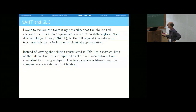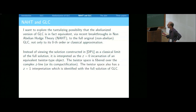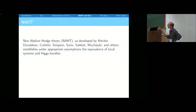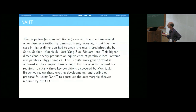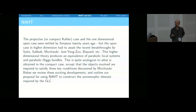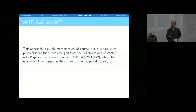I told you a little bit about non-abelian Hodge theory, and we've heard about it in detail. Here are the results that I actually need. In the projective compact Kähler case, this is Simpson's result. So is the one-dimensional punctured case. Mochizuki extended that to arbitrary dimension.